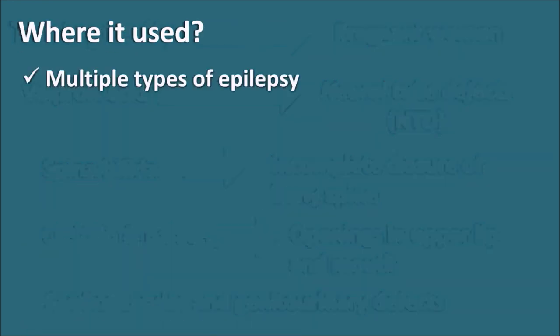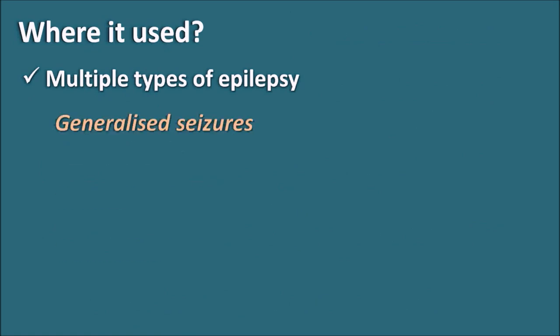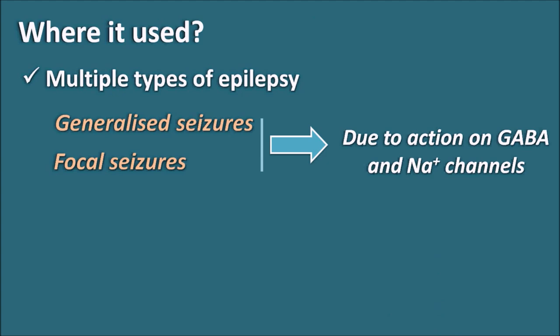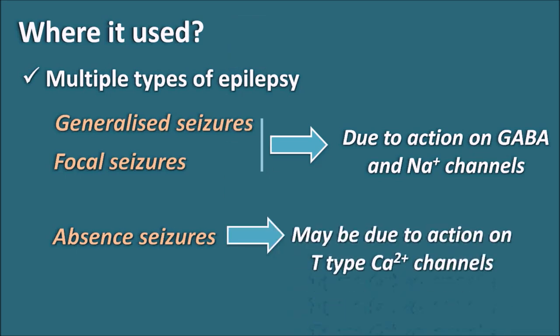Valproic acid is used in multiple types of epilepsy. It can be used in generalized seizures as well as focal seizures, attributable to its action on GABA levels, GABA receptors, and sodium channel blockade. It can also be used in absence seizures, with this action attributed to its effect on T-type calcium channels.